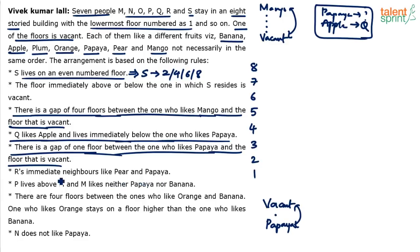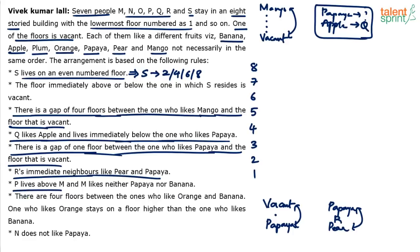R's immediate neighbors like pear and papaya, meaning R is between pear and papaya. The two possibilities are papaya-R-pear or pear-R-papaya. P lives above M, and M likes neither papaya nor banana. There are also four floors between the one who likes orange and the one who likes banana, with orange staying on a floor higher than banana. N does not like papaya.